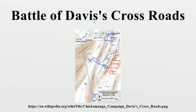The Battle of Davis's Crossroads, also known as the Battle of Dug Gap, was fought September 10–11, 1863, in northwestern Georgia, as part of the Chickamauga Campaign of the American Civil War. It was more of a series of maneuvers and skirmishes than an actual battle, and casualties were negligible.